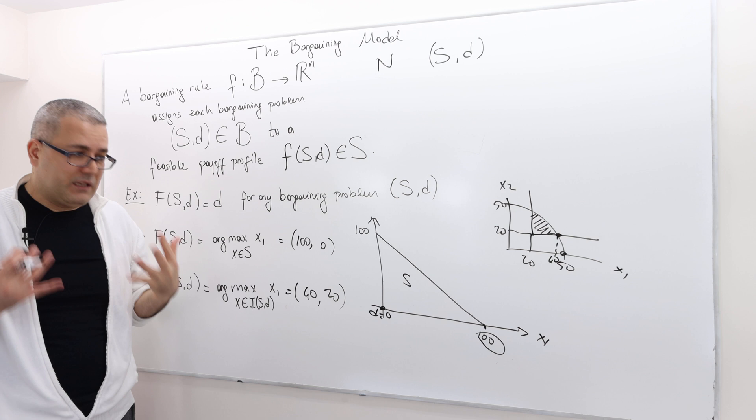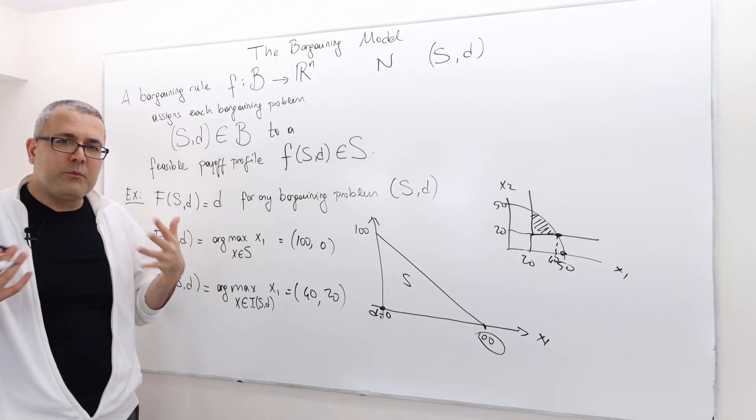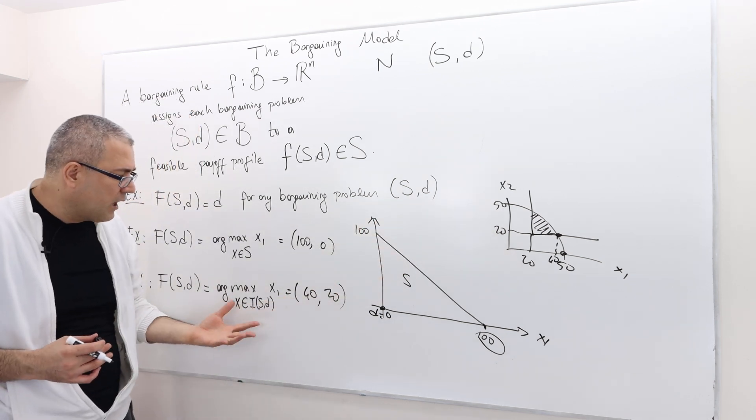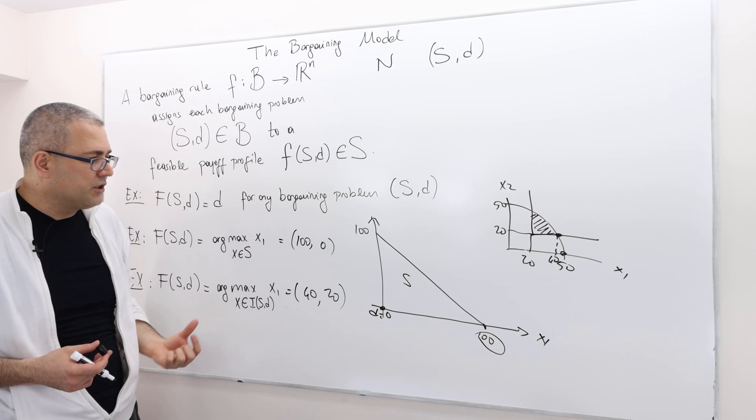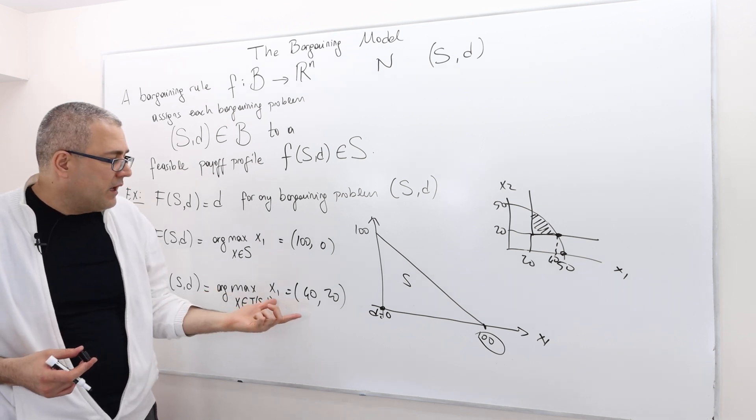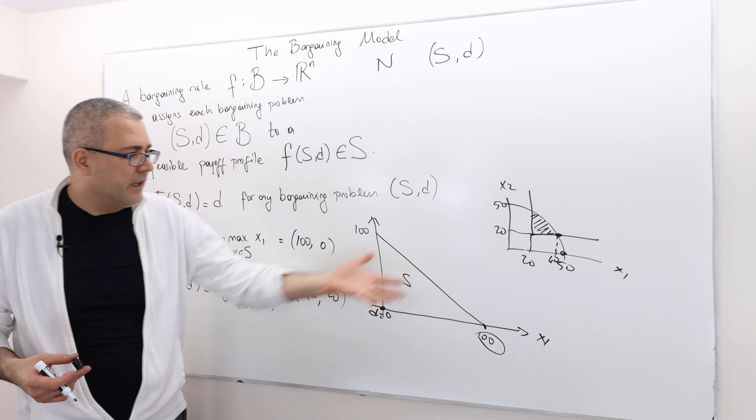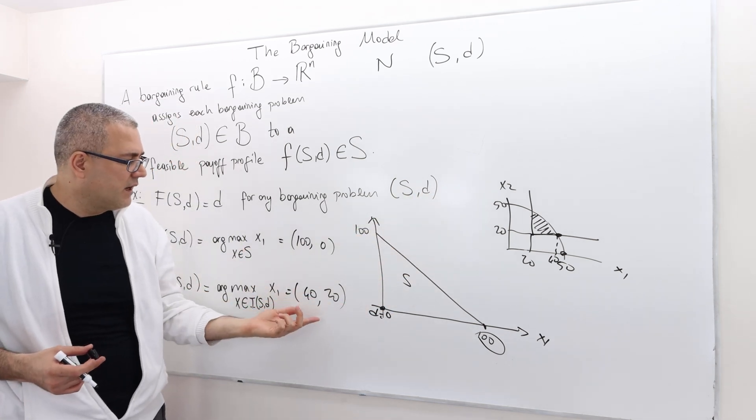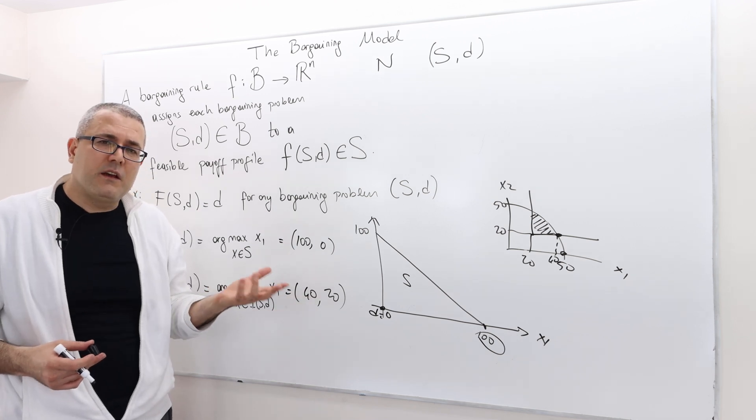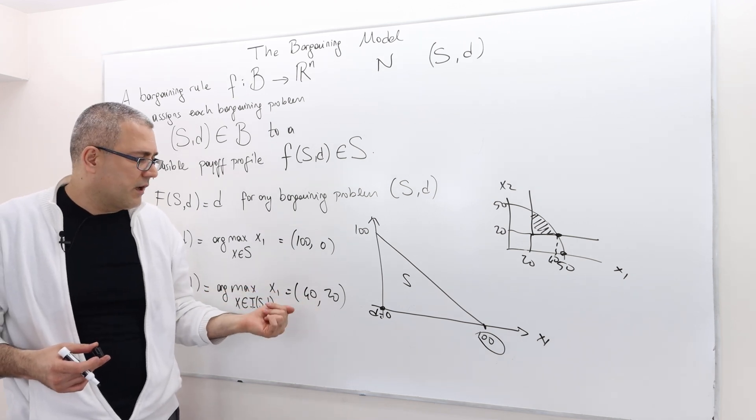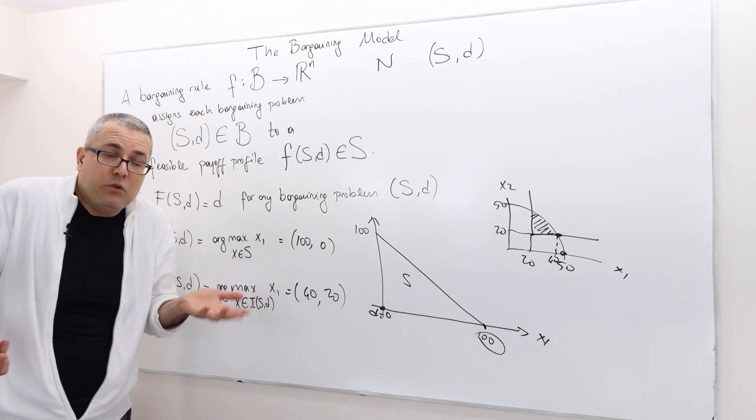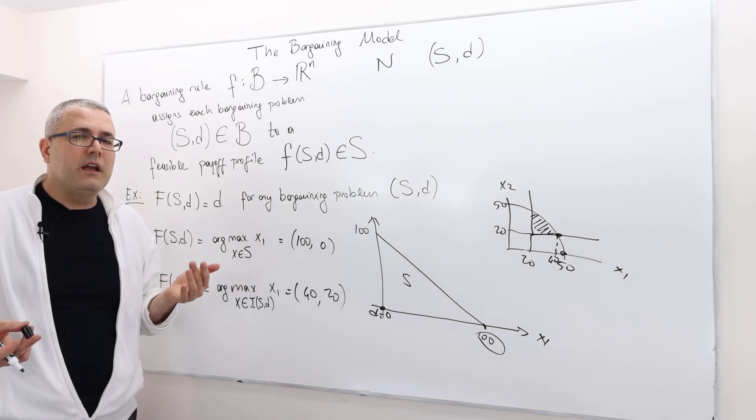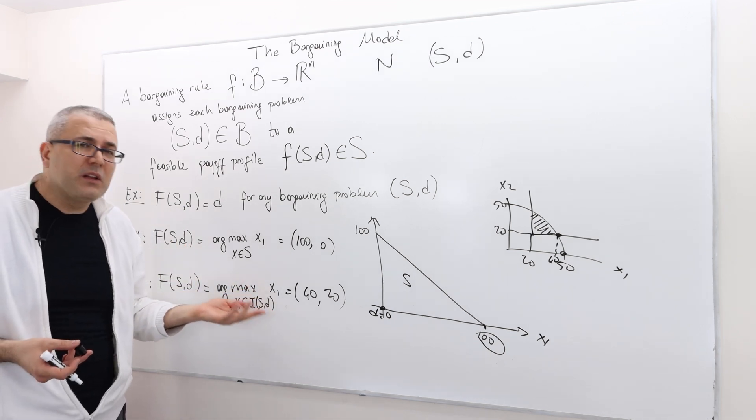What about this problem? This problem, it seems like it's good almost in any problems in the sense that it's going to give us individually rational payoffs because it does actually care about individual rationality. And it's most probably going to give efficient or Pareto-efficient outcomes as well. But the problem here is you may argue, this is not going to be fair.